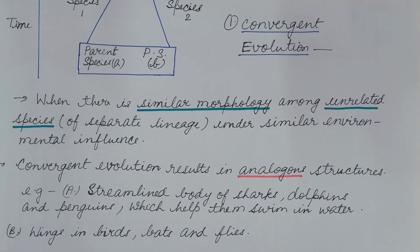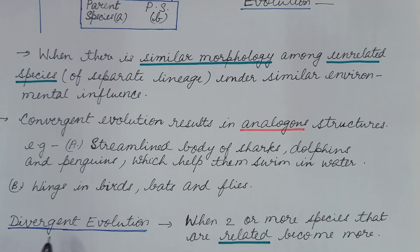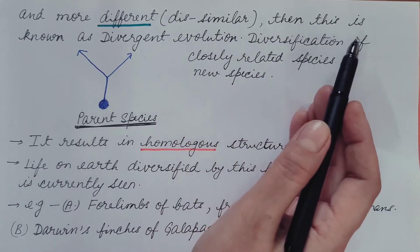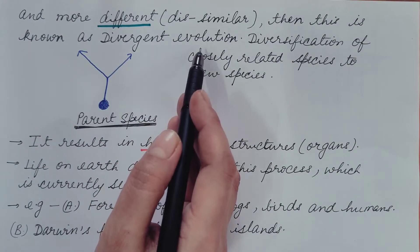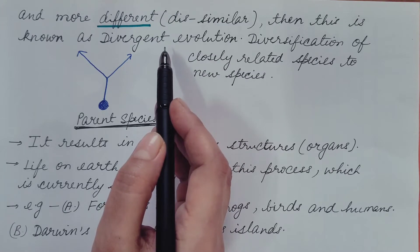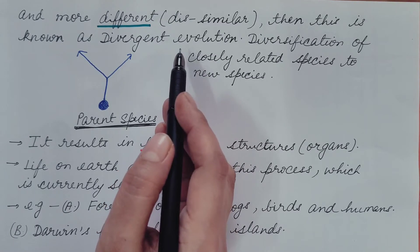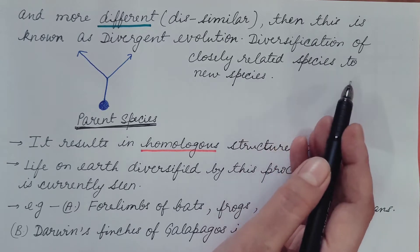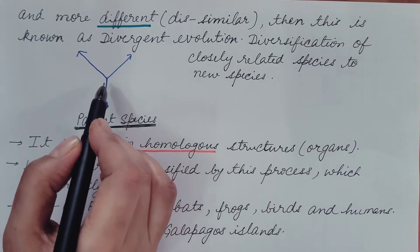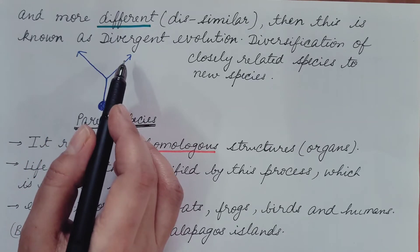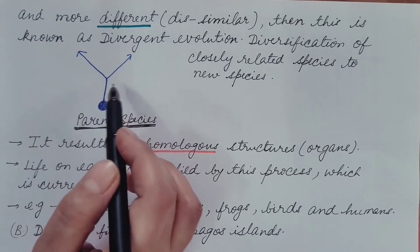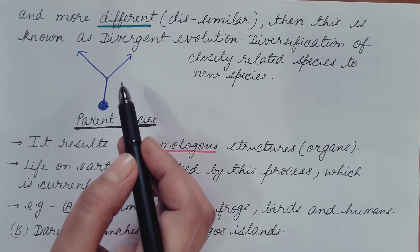The second is divergent evolution — when two or more species that are related become more and more dissimilar, this is known as divergent evolution. These species become dissimilar under the influence of different environmental factors, resulting in diversification of closely related species into new species. The parent species, under different environmental influence, diverges into two different species — species one and species two — showing dissimilarity. This is divergent evolution.